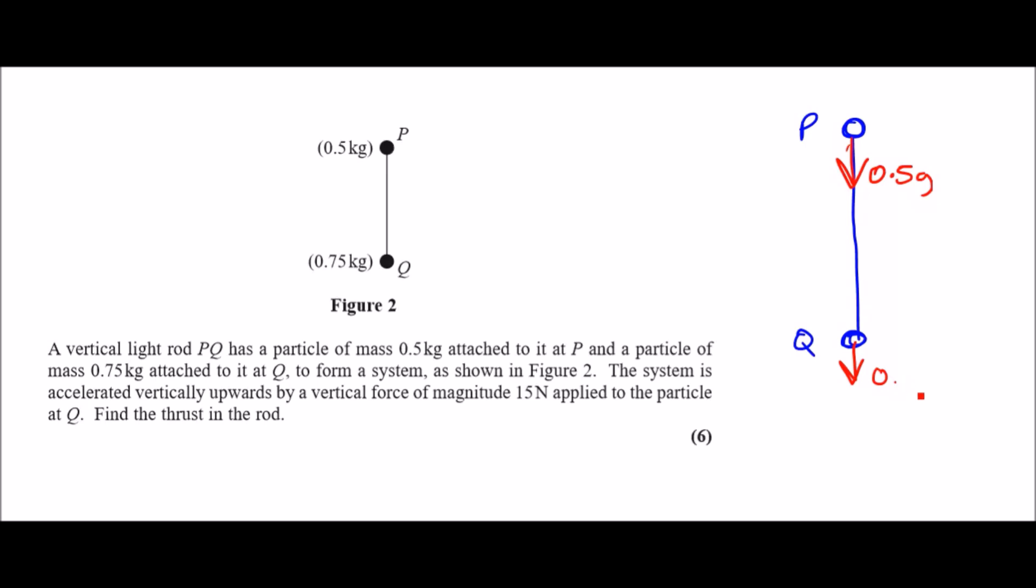And at Q there is a mass of 0.75 kg, so 0.75g. We also know that the system is accelerated vertically upwards, so let's do the acceleration sign pointing upwards.